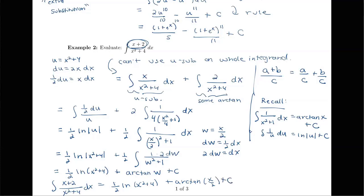That is our final answer for that integral. One thing to keep in mind: with this type of function — a linear numerator over a quadratic denominator — you'll always be able to split it up and get some sort of log function plus some sort of arctangent function. Those are the two pieces that make up the antiderivative.